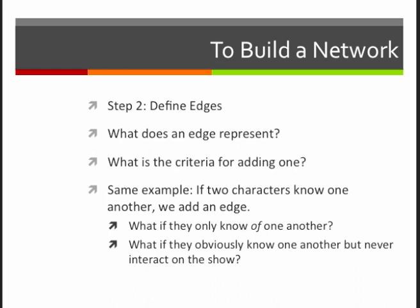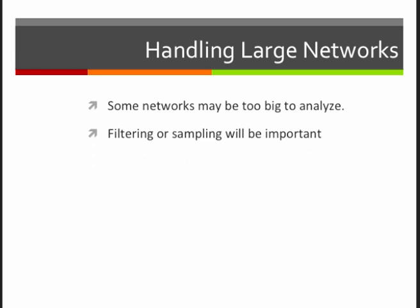So those are basic decisions for putting a network together. The next thing to think about is how to handle large networks. Some networks are going to be too big to analyze and this includes networks where the decision has already been made for you about who the nodes and edges are. In this case, you might need to filter or sample the network.